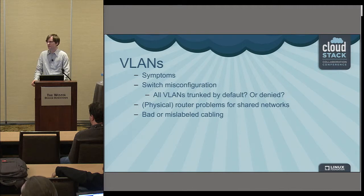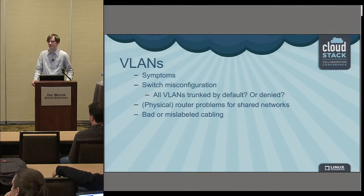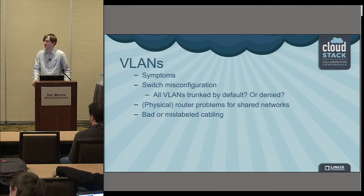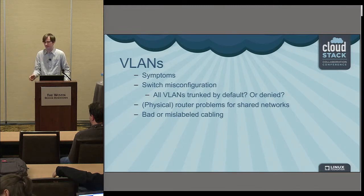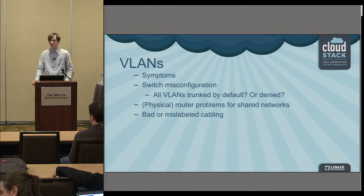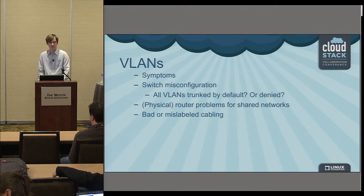I've seen cases where there were active-active switches with some kind of load balancing between routers, and one of them was broken and not handling certain VLANs. So it can be quite complicated — it's just the hardware being very troublesome at times.